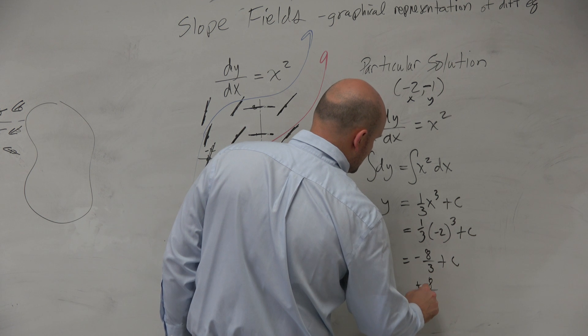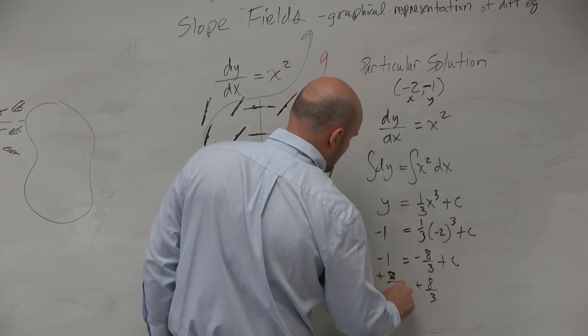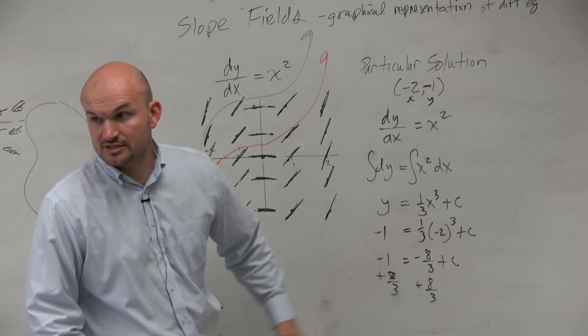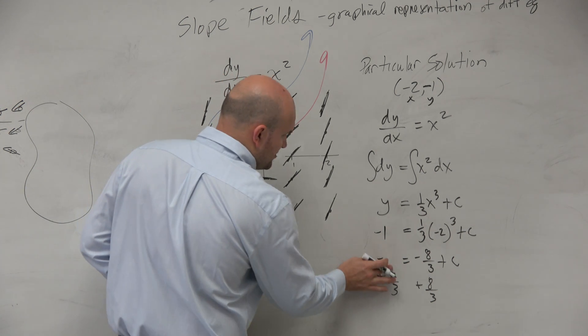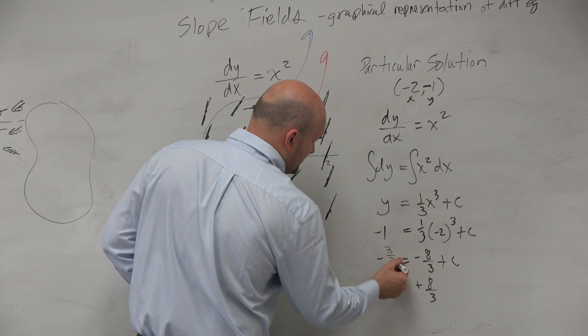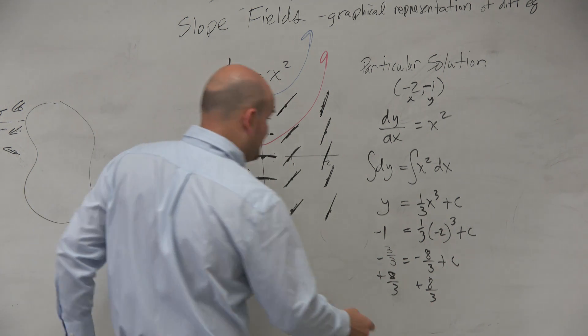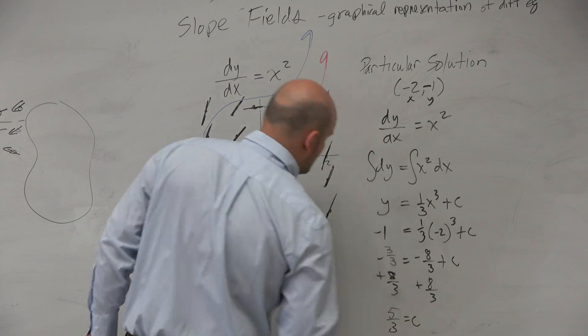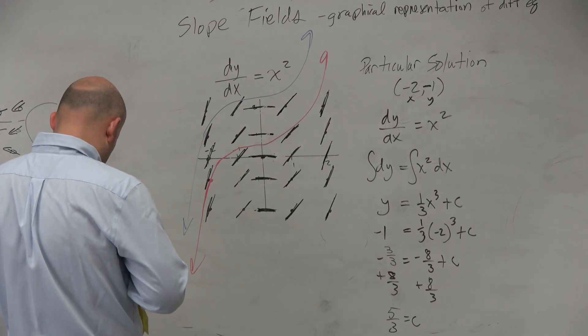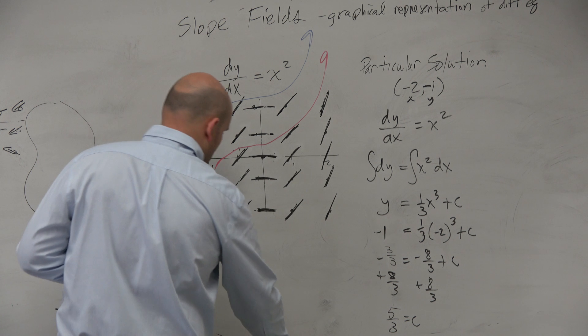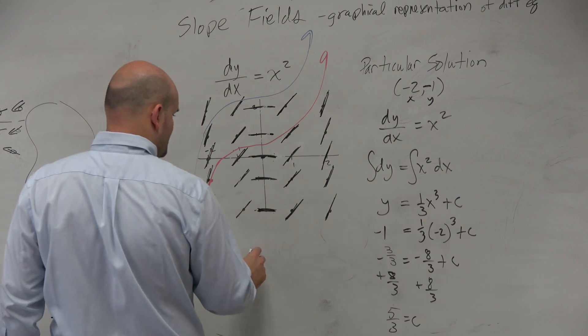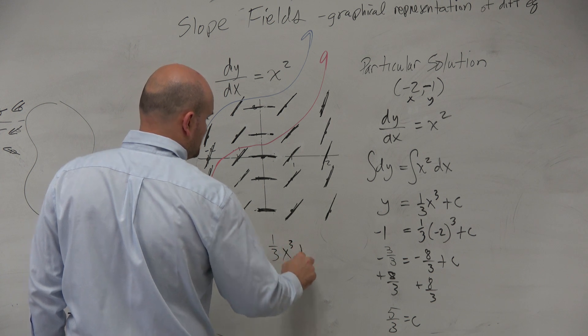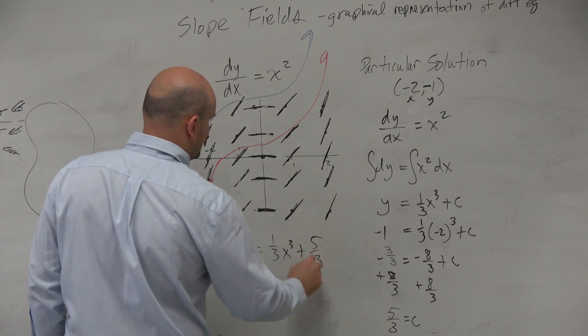Negative 8 times 1 3rd is negative 8 3rds plus c. Add 8 3rds to both sides. We could really rewrite negative 1 as negative 3 over 3. You guys OK with that? So let's just replace that with negative 3 over 3. So therefore, my answer would be 5 3rds. 5 3rds is equal to c. So therefore, my equation is y equals 1 3rd x cubed plus 5 3rds.